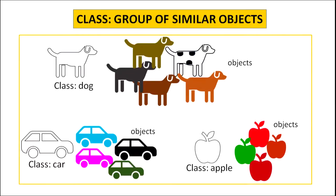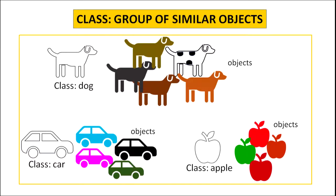Now there may be many objects of the same kind. The objects of similar attributes and common behavior form a class. If you look at the slide, all these dogs are objects and they belong to the class dog. Similarly, all these cars and apples belong to the classes car and apple respectively. So class defines what an object is to be, and this definition is given in terms of attributes and behavior, where attributes describe the object and behavior are the functions which can be performed by an object.